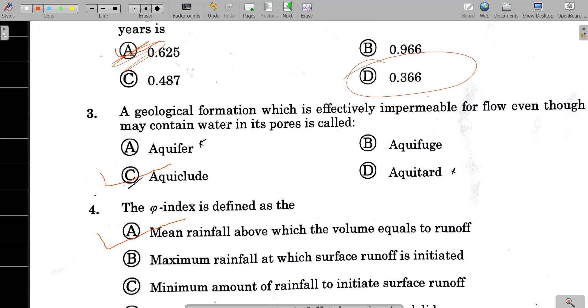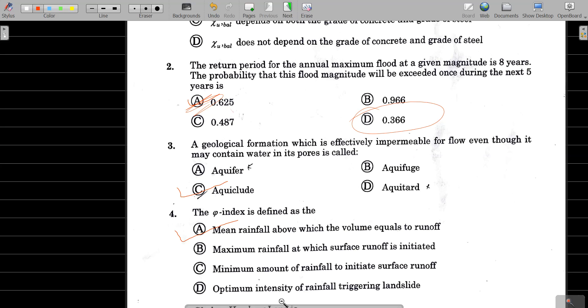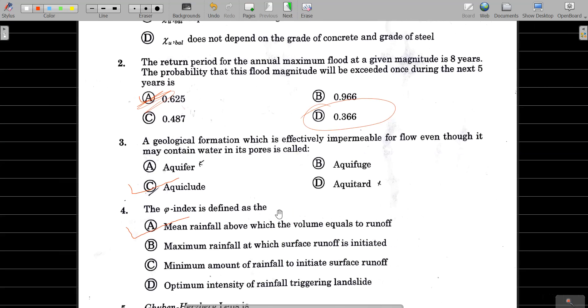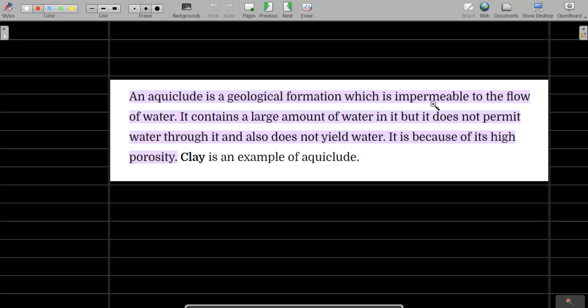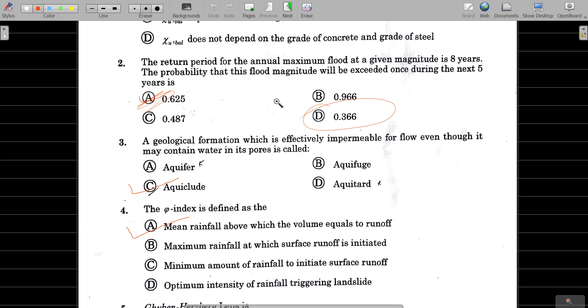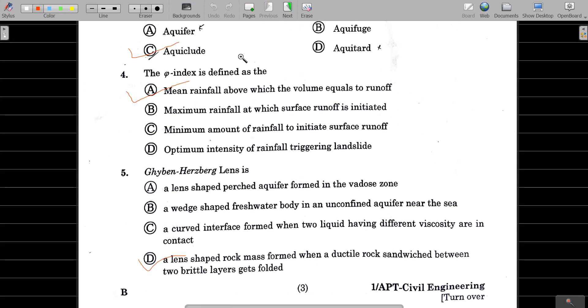Next: A geological formation which is effectively impermeable for flow, even though it may contain pores. The correct answer is equi-glute. Equi-glute is basically a geological formation which is impermeable to the flow of water. It contains water but does not permit water to move through it because of its high porosity. For example, clay is an example of equi-glute.